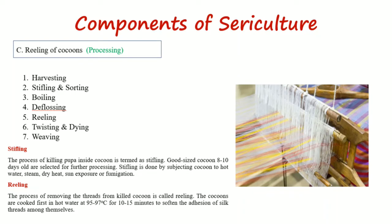Next is boiling of the cocoons, followed by deflossing. Deflossing is the removal of the soft and loose layer of silk filament from the cocoons. Next is reeling, which is the removal of silk threads from the killed cocoons. For this purpose, the cocoons are cooked in hot water at 95 to 97 degrees centigrade for about 10 to 15 minutes, softening the silk threads. Next is twisting and dyeing — twisting the extracted silk thread and dyeing means coloring the silk thread. Finally, weaving is the crafting of silk fabric by interlacing the silk threads.